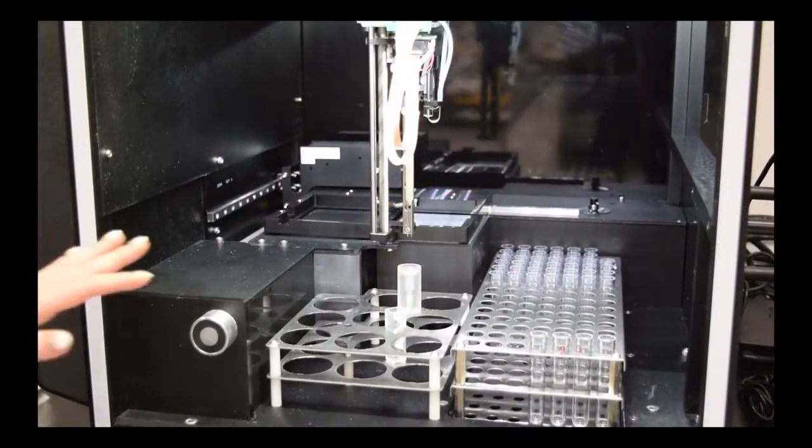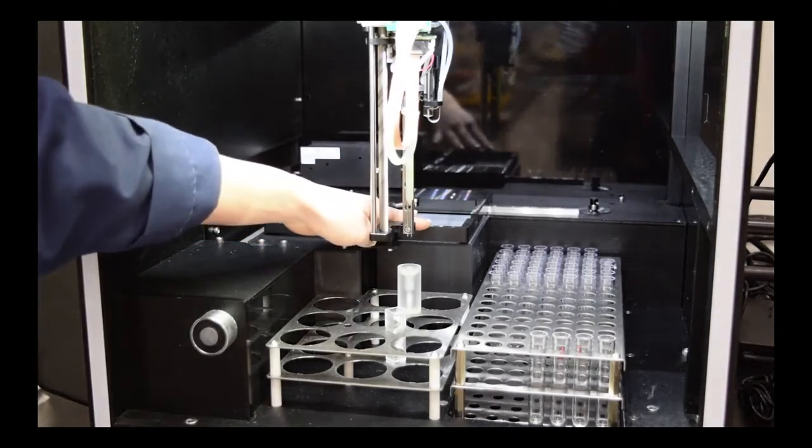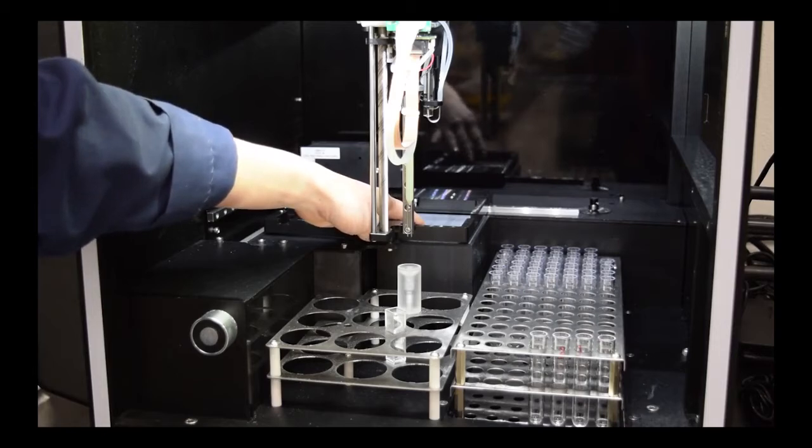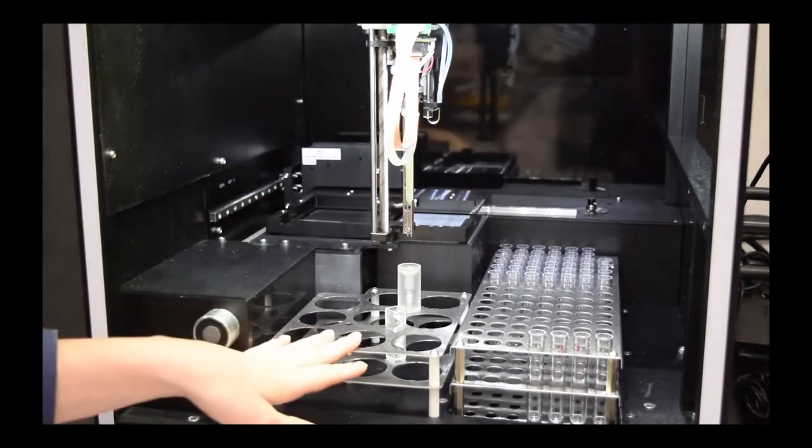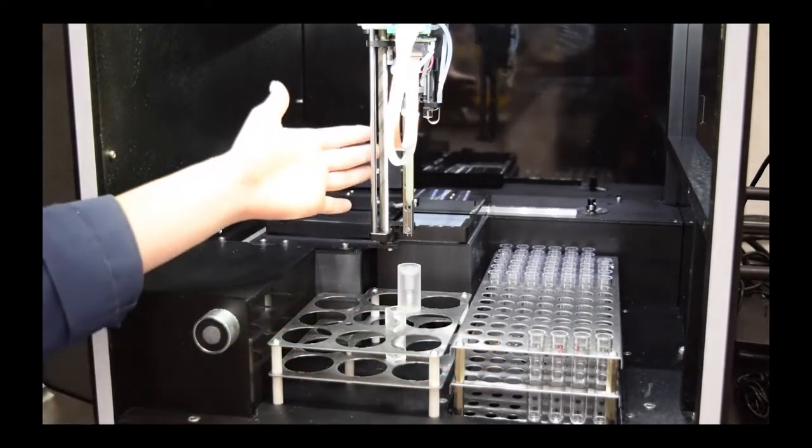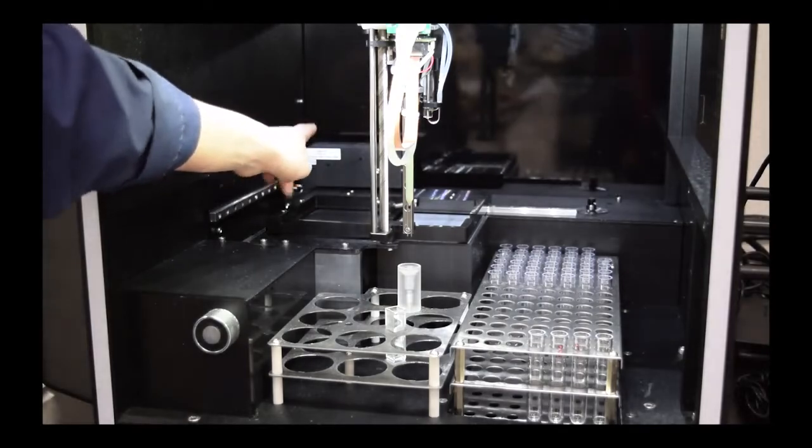Inside the instrument we have the plate platform, an extra plate slot for an intermediate plate, an incubator to incubate your plate up to 40 degrees Celsius if desired, a reagent rack, the sample rack, the probe, and an LED plate reader that comes equipped with five different wavelengths.